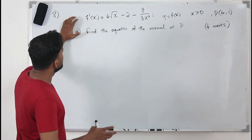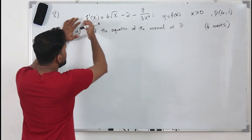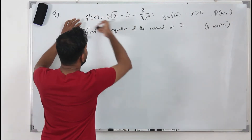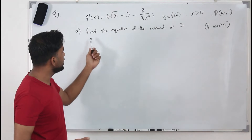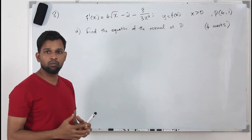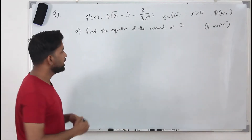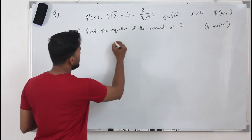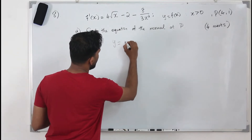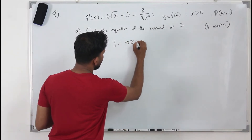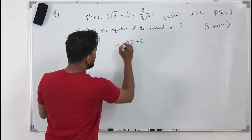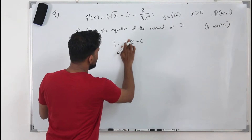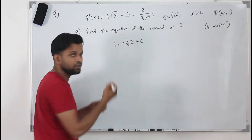You don't need to find the derivative because the derivative is already given. In order to find the equation of the normal, the equation of the normal is a straight line, so y equals mx plus c. The key thing is this is the equation of the tangent — for the normal you need to use the negative reciprocal of your slope.